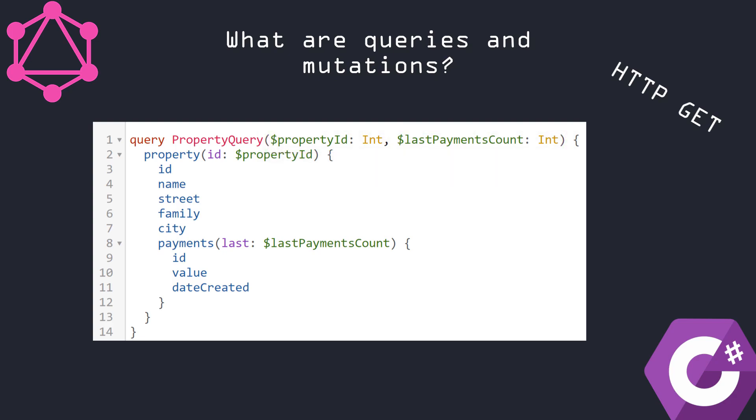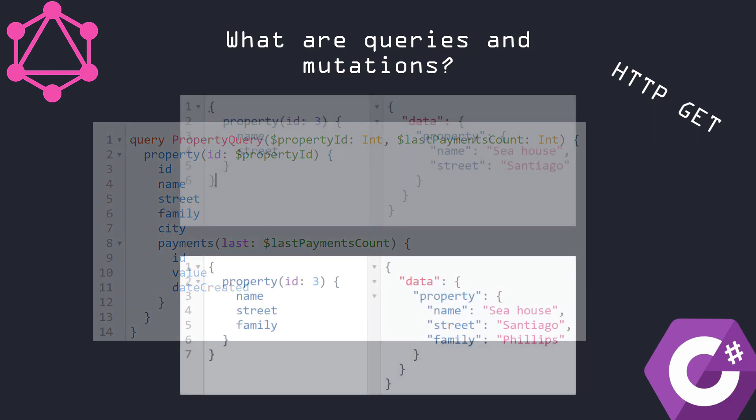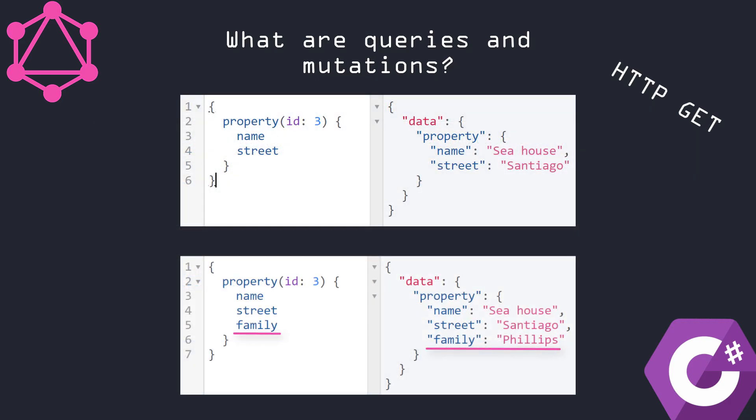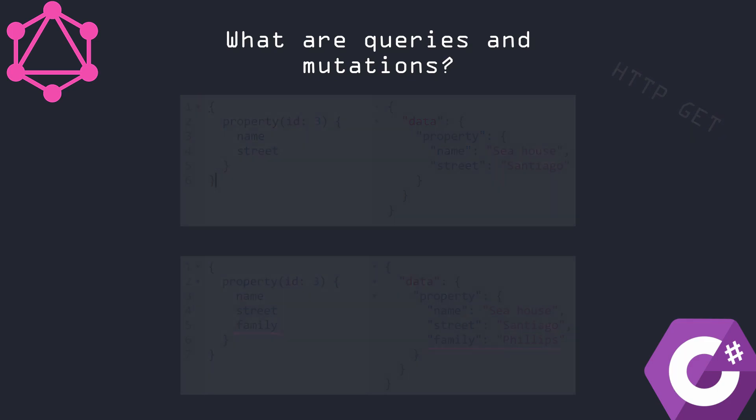What is more specific is that we can adjust what data we want to get from our query. I described it in the first part of this tutorial, and if you haven't watched it, I highly encourage you to see it to understand this concept. We can also do some more advanced things with queries like using fragments or directives, but the whole concept is that it is useful when getting data from the server. So let's jump to the second point: mutations.